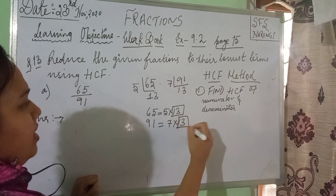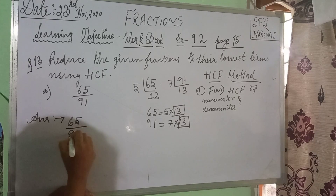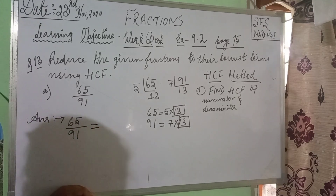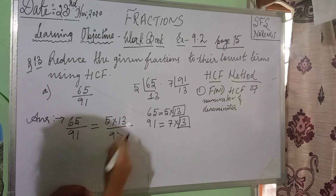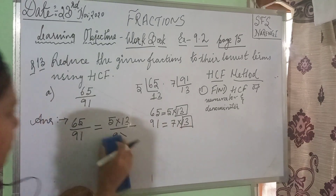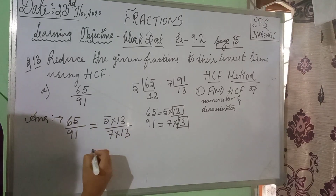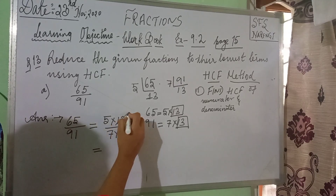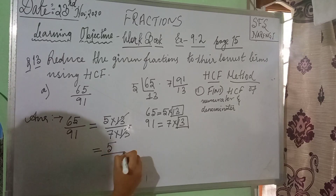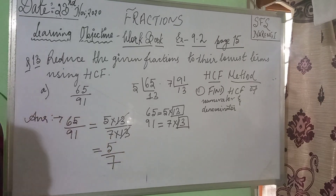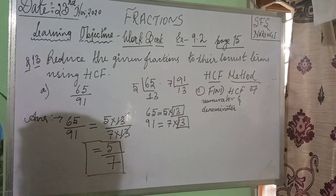The highest common factor is 13. So 65 divided by 91 can be written as 5 multiplied by 13 over 7 multiplied by 13. Since the highest common factor is 13, cancel out the 13s. You are left with 5 divided by 7. So your answer is 5 divided by 7.